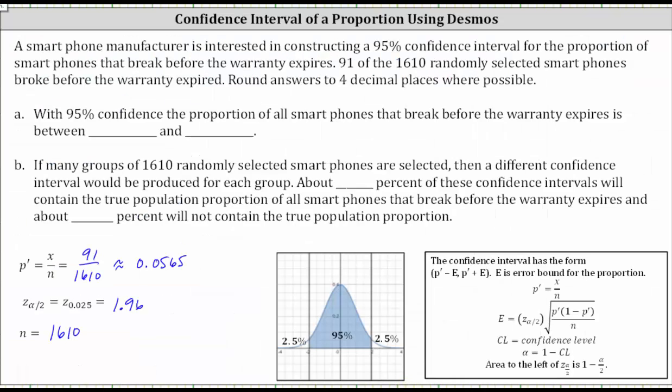For part A, with 95% confidence, the proportion of all smartphones that break before the warranty expires is between 0.0452 and 0.0678. As percentages, that would be 4.52% and 6.78%.